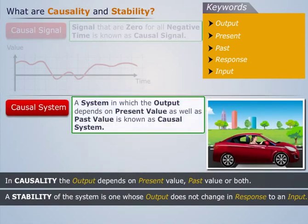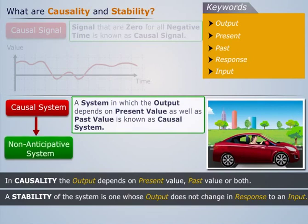Thus causal system is also referred to as non-anticipative system as the output does not anticipate the future value of the input.